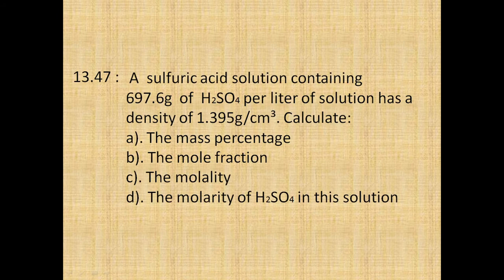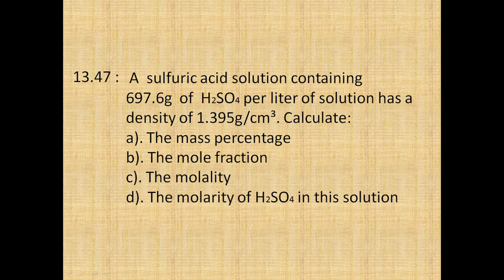Here is the question. A sulfuric acid solution containing 697.6 grams of sulfuric acid per liter of solution has a density of 1.395 grams per cubic centimeter. Calculate: A, the mass percentage; B, the mole fraction; C, the molality; and D, the molarity of sulfuric acid in this solution.